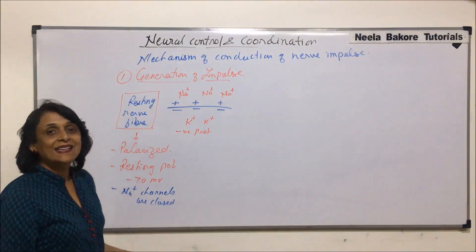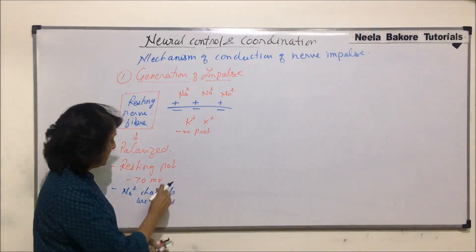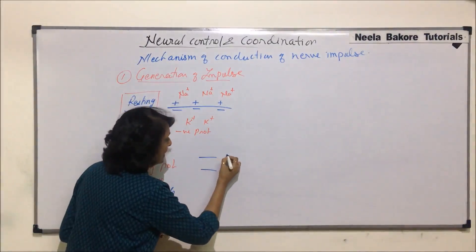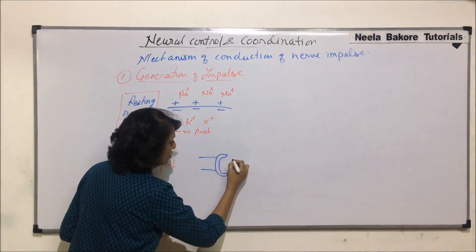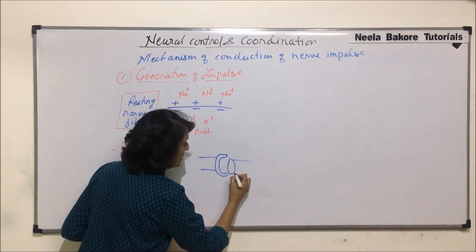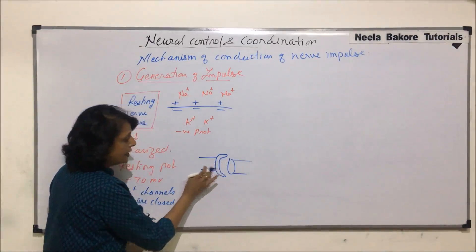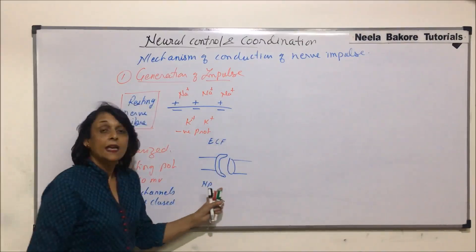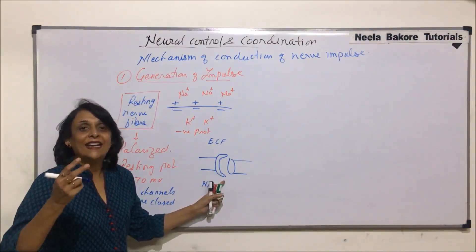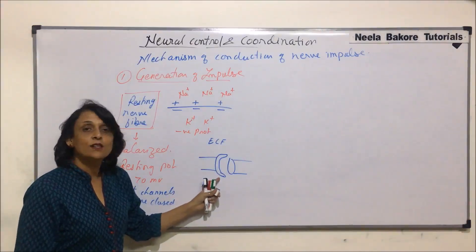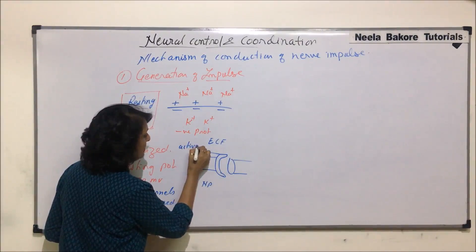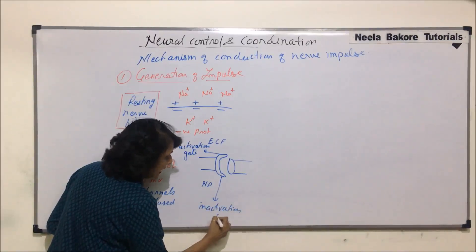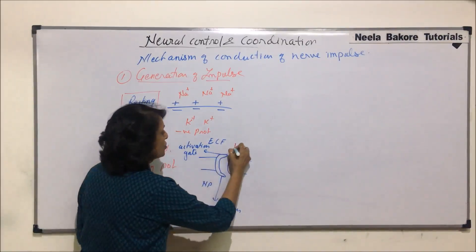We can draw the same membrane in a slightly different manner to understand this. The sodium channel is a transmembrane protein embedded in the plasma membrane phospholipid bilayer. This channel has two gates: the outer one is known as the activation gate and the inner one is known as the inactivation gate. Outside, there are more sodium ions.